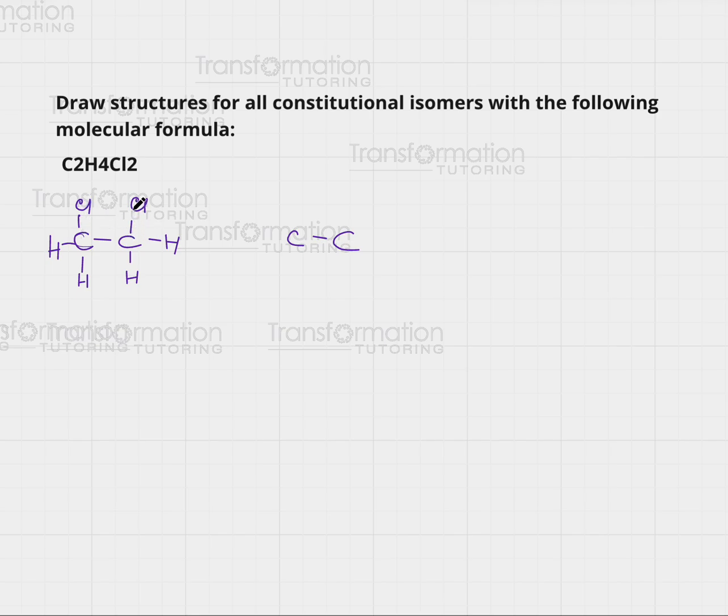Here they were located one on each carbon. Well I could also put both of them on the same carbon and again every carbon wants to have four bonds so I distribute my four hydrogens this way. These two are constitutional isomers because they have exactly the same number of carbons, chlorines and hydrogens but their connection and their names would be different.